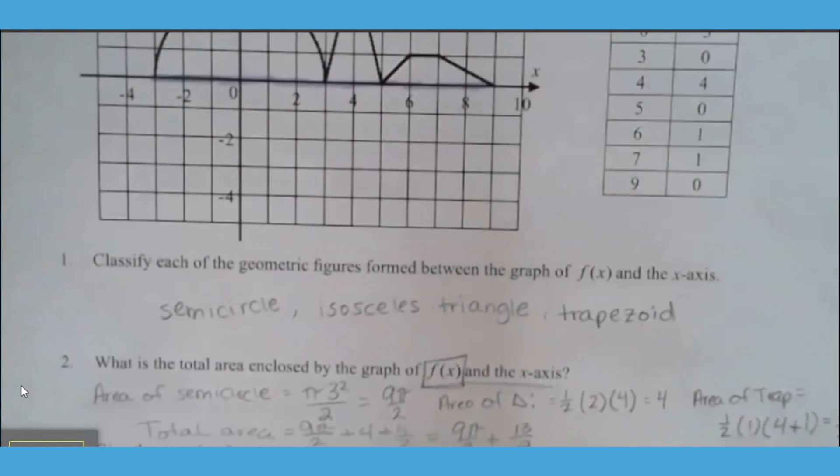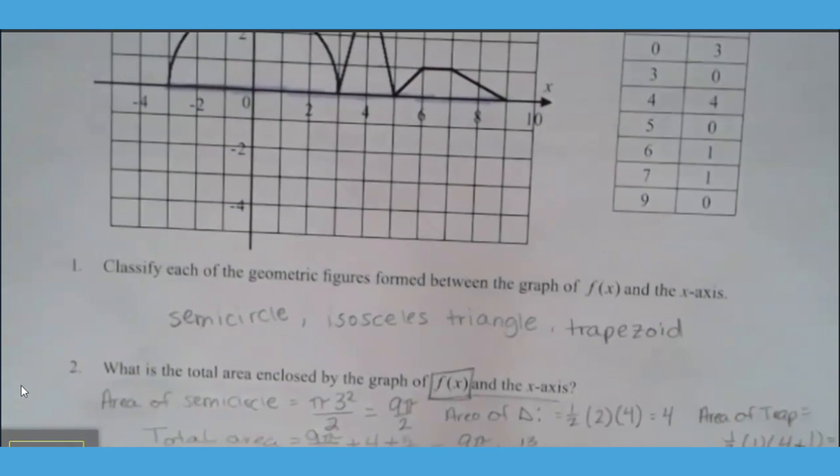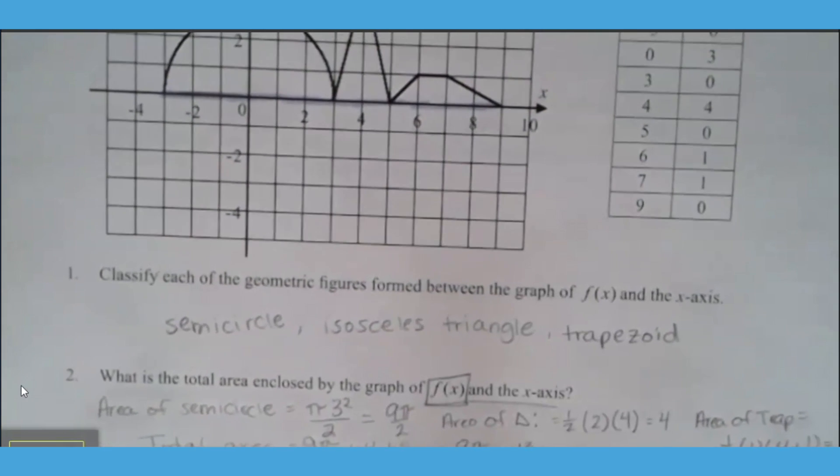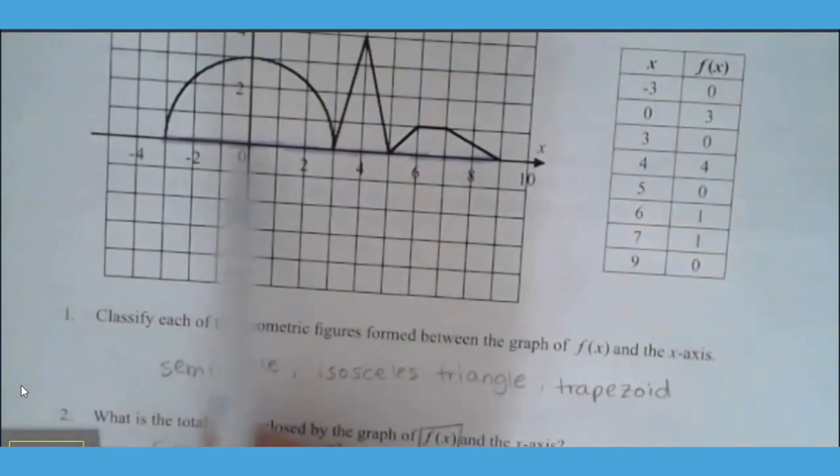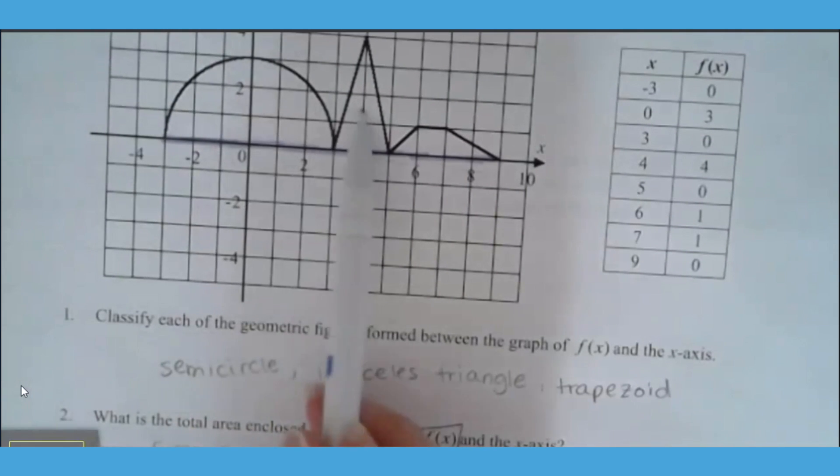So moving on to question number two. What is the total area enclosed by that graph and the x axis? So if you can see, I've actually highlighted the x axis so they can see that boundary line. I'm trying to find the area of this semicircle, the area of this triangle, and the area of this trapezoid.